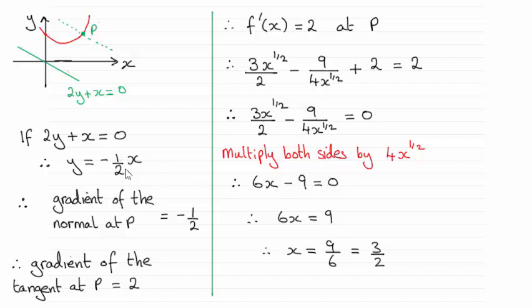So that means that the gradient of the normal passing through P, because it's parallel to this line, must also have a gradient of minus a half.